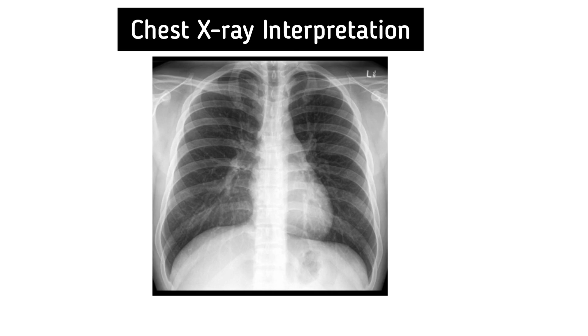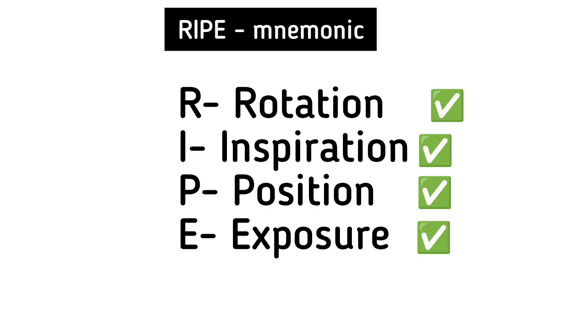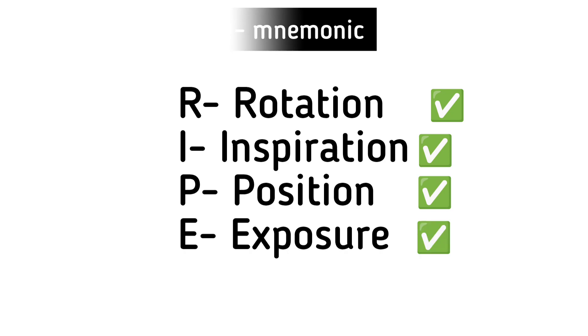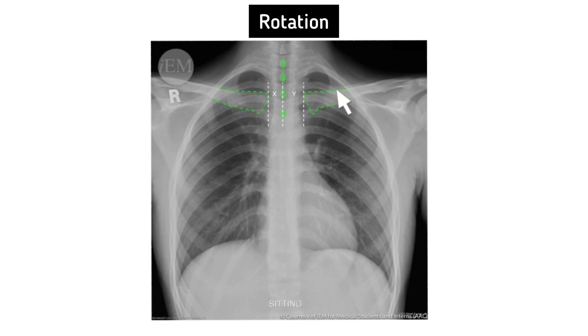We will give some pathologic examples. While assessing the image quality, the RIPE mnemonic is used, where R stands for rotation, I stands for inspiration, P stands for position, and E stands for exposure. First, let's talk about rotation.